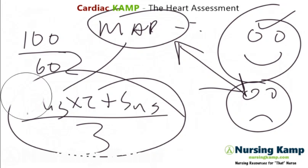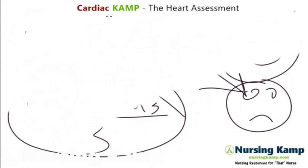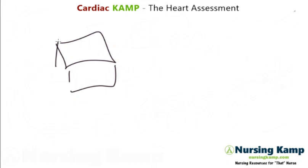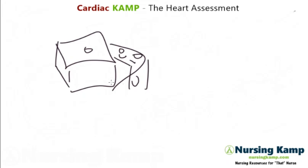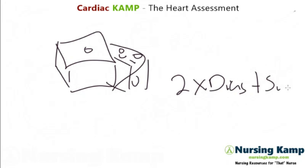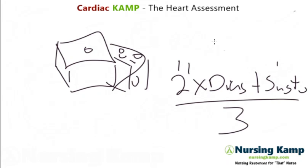Yeah, I know — a lot of math. So how do we figure that out? I used to play board games, and in board games there are two dice. So: two times diastolic, plus systolic — that's three items — divided by three. That will give us our mean arterial pressure.